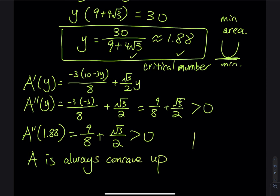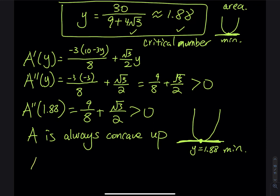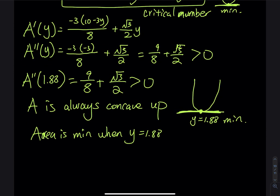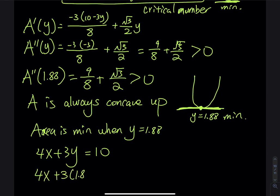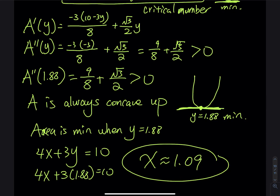The area function is always concave up with a critical point at y ≈ 1.88, confirming a minimum there. To find x, go back to the secondary equation: 4x + 3(1.88) = 10, solving gives x ≈ 1.09. So with dimensions x ≈ 1.09 for the square and y ≈ 1.88 for the triangle, you get the minimum total area.